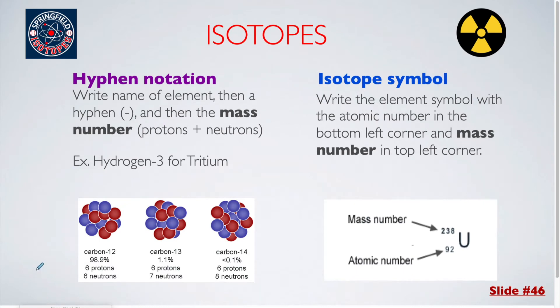There are a few different ways that you can differentiate between different types of isotopes. The first is hyphen notation. For hyphen notation, you write the name of the element, then a hyphen, and then the mass number, which is the protons and neutrons added together.